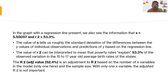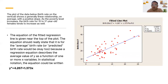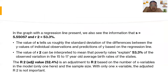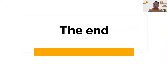The adjusted R² value of 52.4% is an adjustment to R² based on the number of X variables in the model and the sample size. With only one X variable, the adjusted R² is not that important. That's it — thank you so much, everyone.